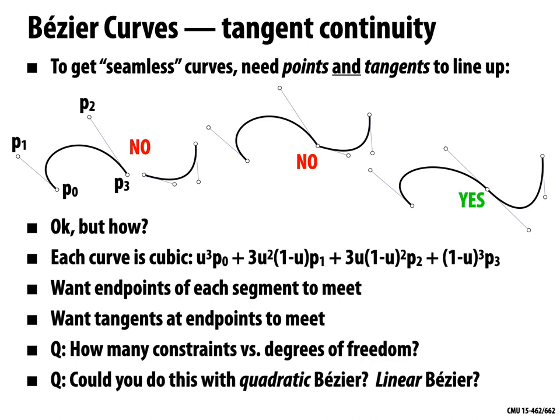Could you do this with a quadratic or linear Bézier curve? If we reduce the degree of these curves, we reduce the degrees of freedom and can no longer get this nice continuity. That's one argument for why cubic Bézier curves are preferred — you can at least get tangent and position continuity.